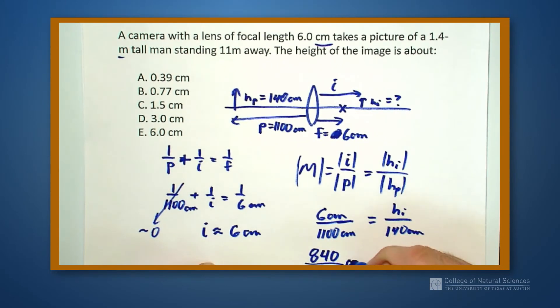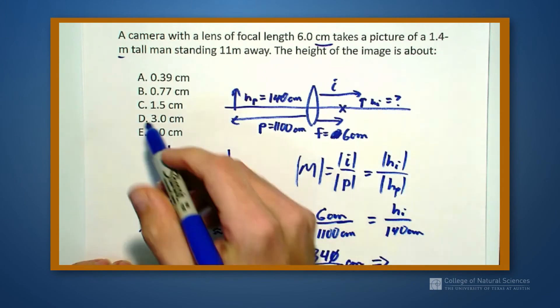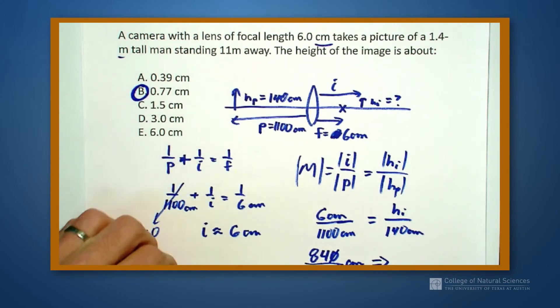So I'm looking at 840 over 1100, which is 84 over 110. I can actually look at my answers now and reduce this down to about 80 over 100, which looks like 0.77 centimeters. So I didn't even actually have to use a calculator for this.